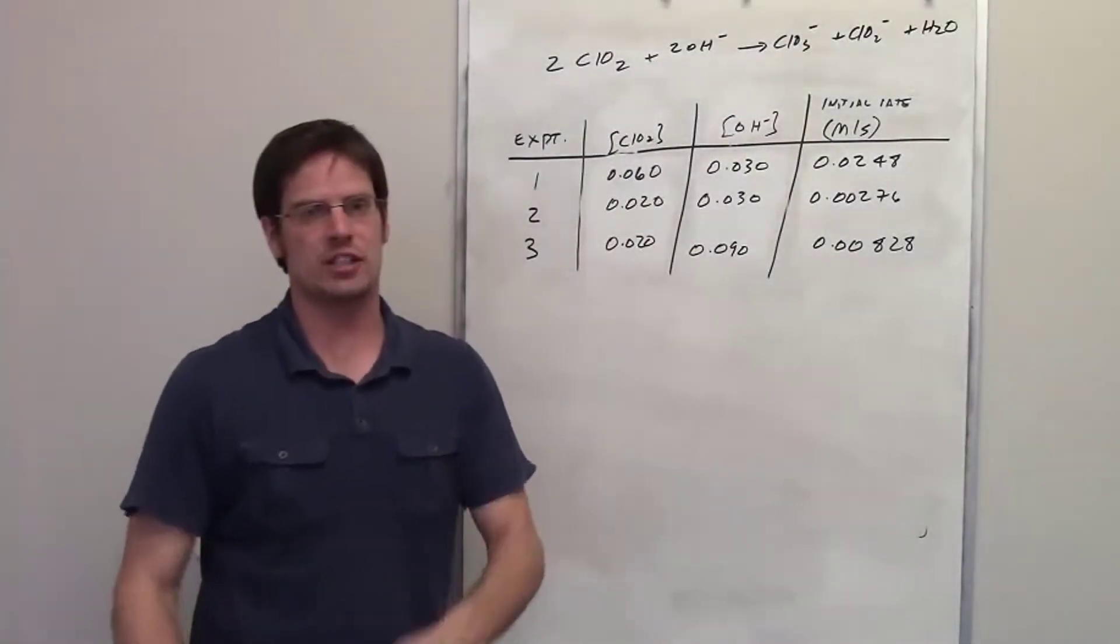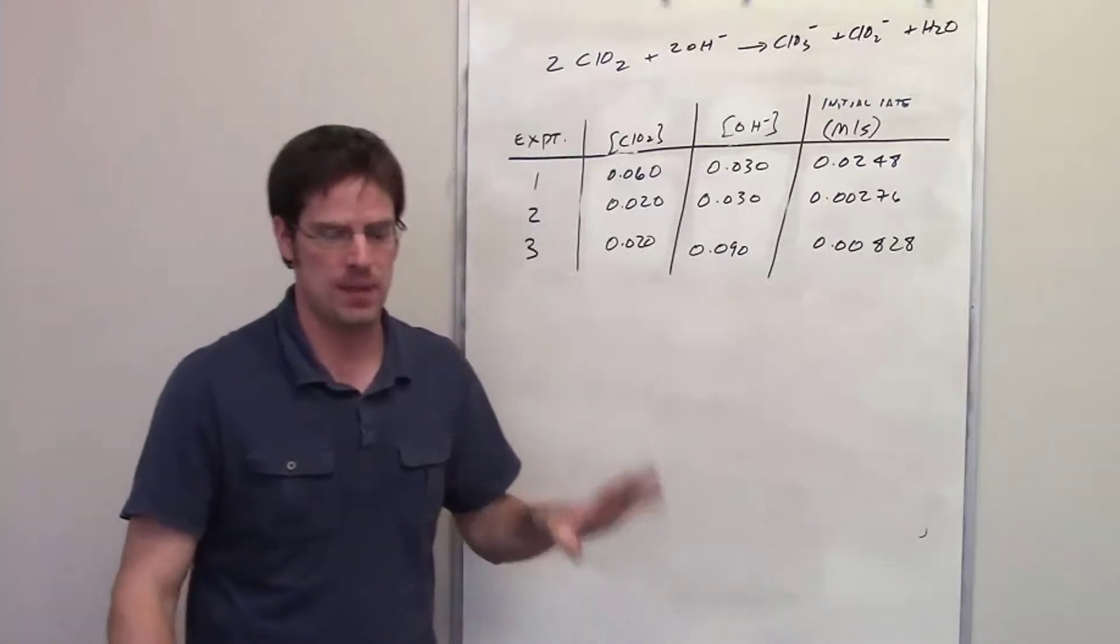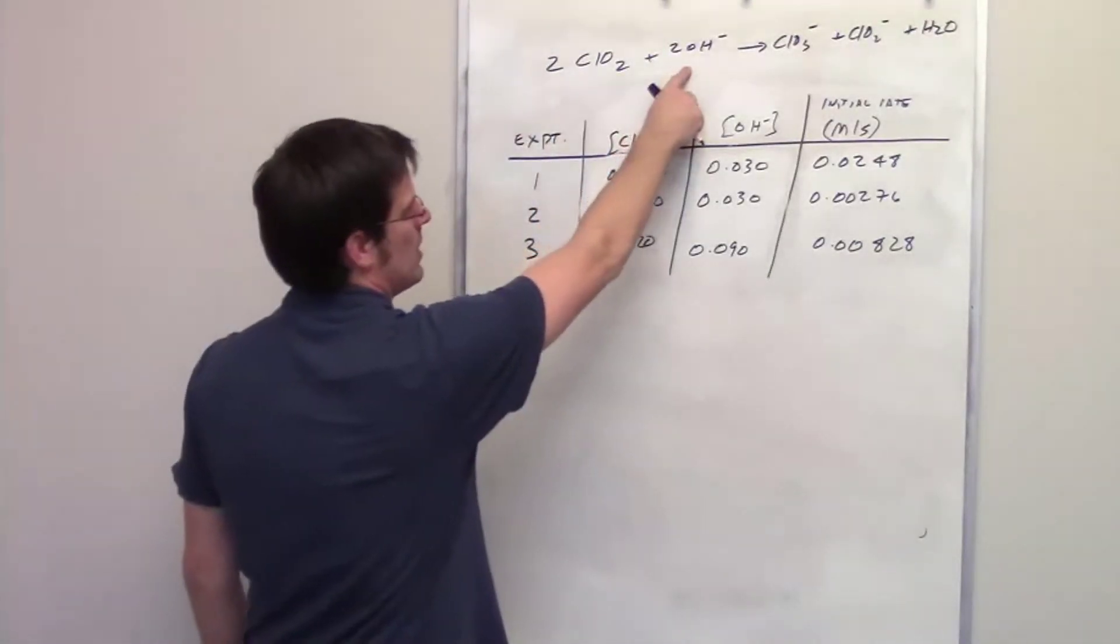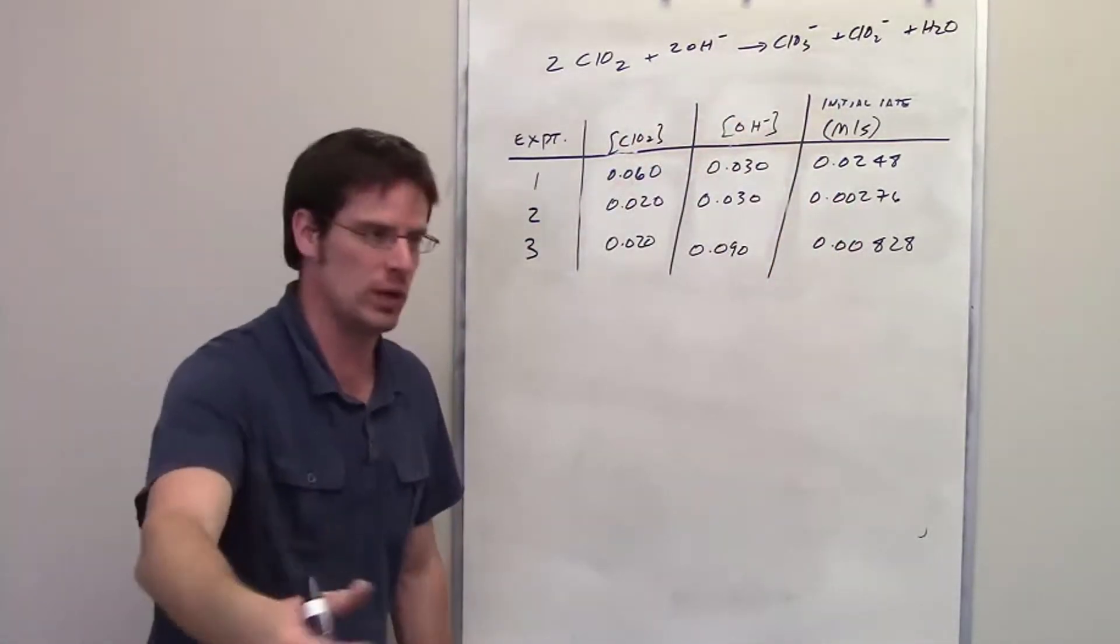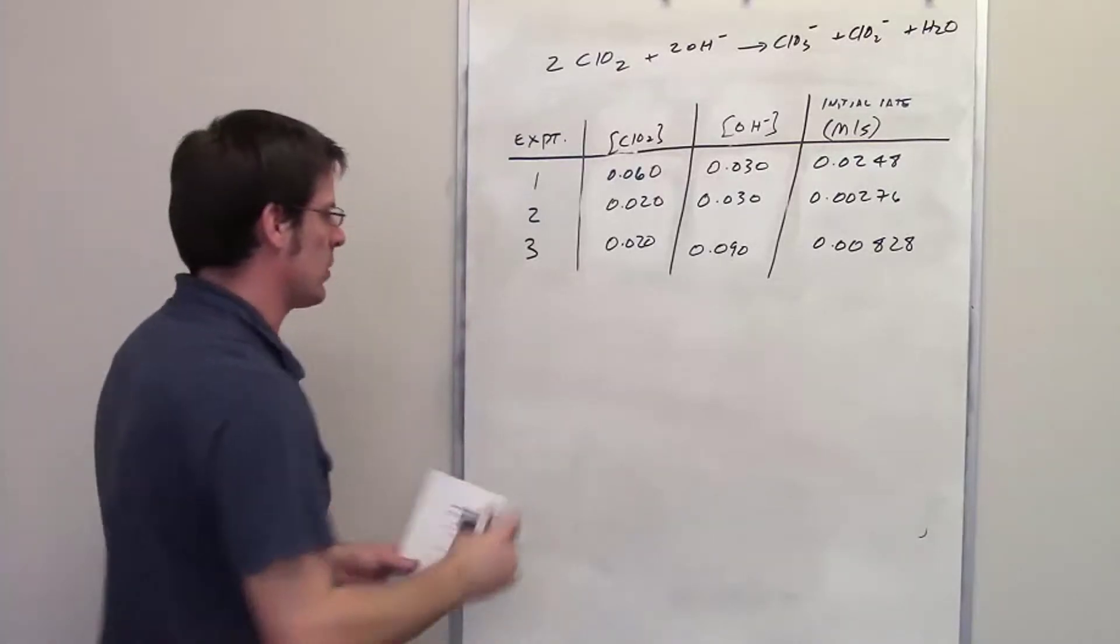This question goes back to a reaction that we covered in an earlier question, a separate video to which I will link right here. This is the reaction, this chlorine dioxide reaction with hydroxide, and it gives us this table of data which we've already seen in an earlier question. I'll post a link here to it if you guys want to go back and see.